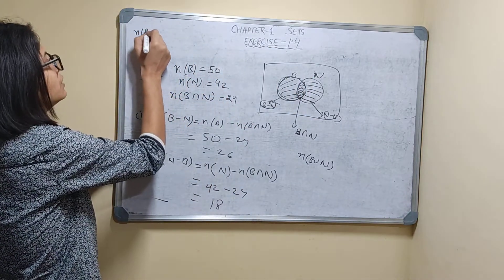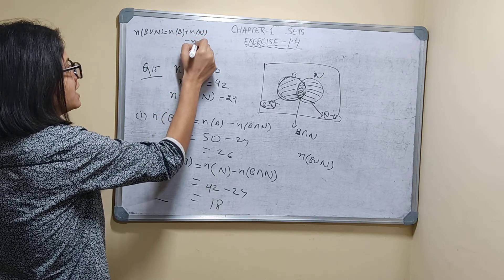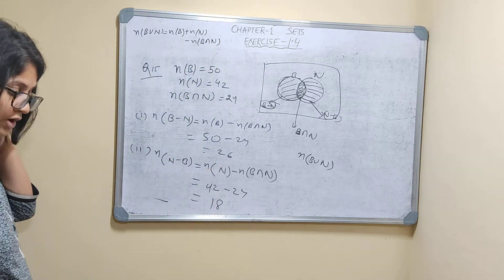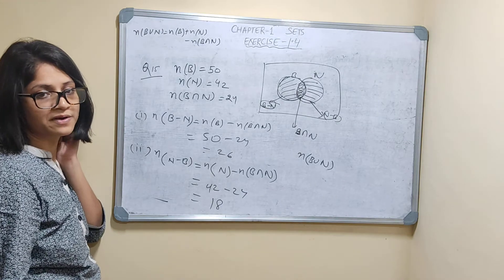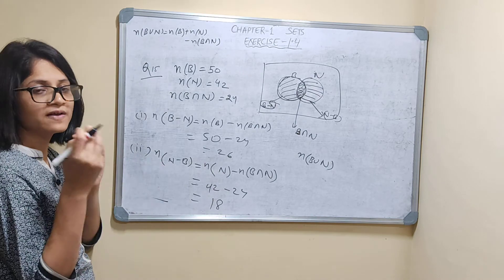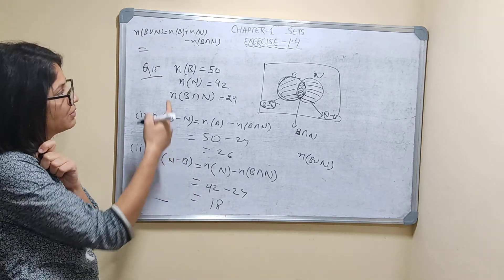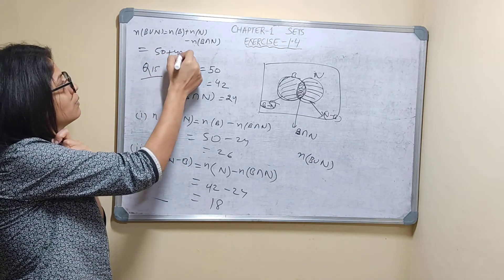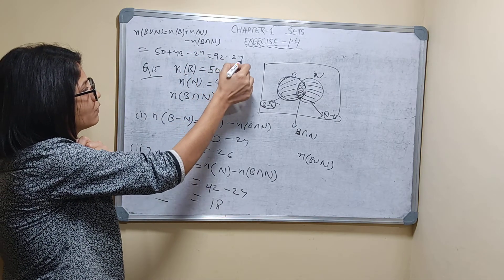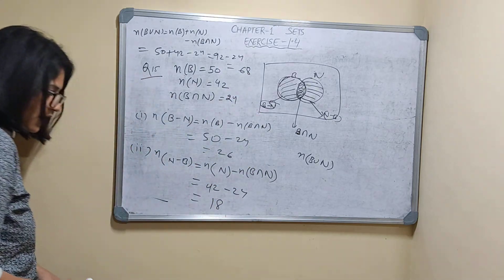n(B ∪ N) = n(B) + n(N) − n(B ∩ N). If they ask any of the two food items, or both items, or at least one of the items, you have to do union only. n(B ∪ N) = 50 + 42 − 24. That is 92 − 24, which is 68. 68 is the answer.